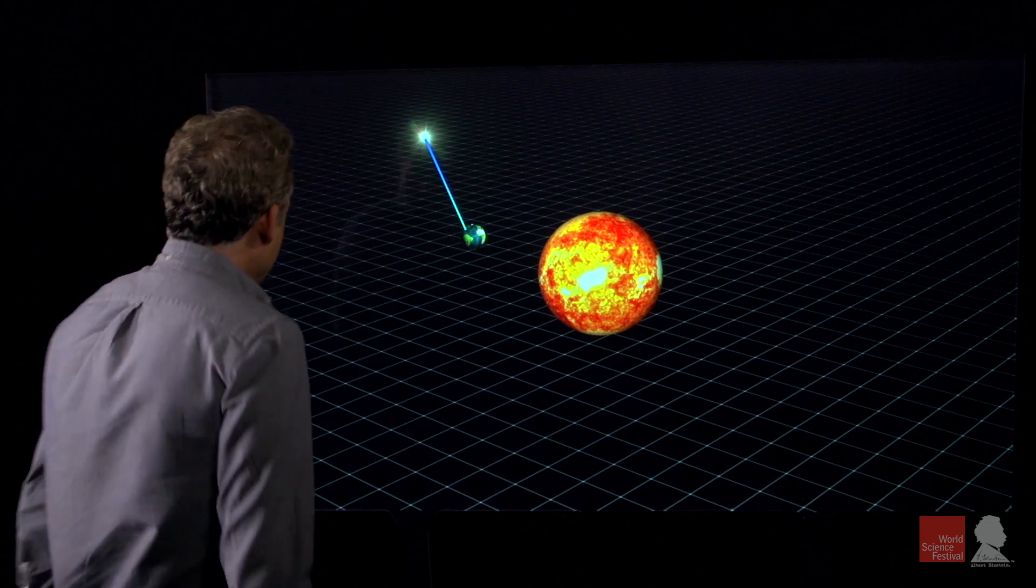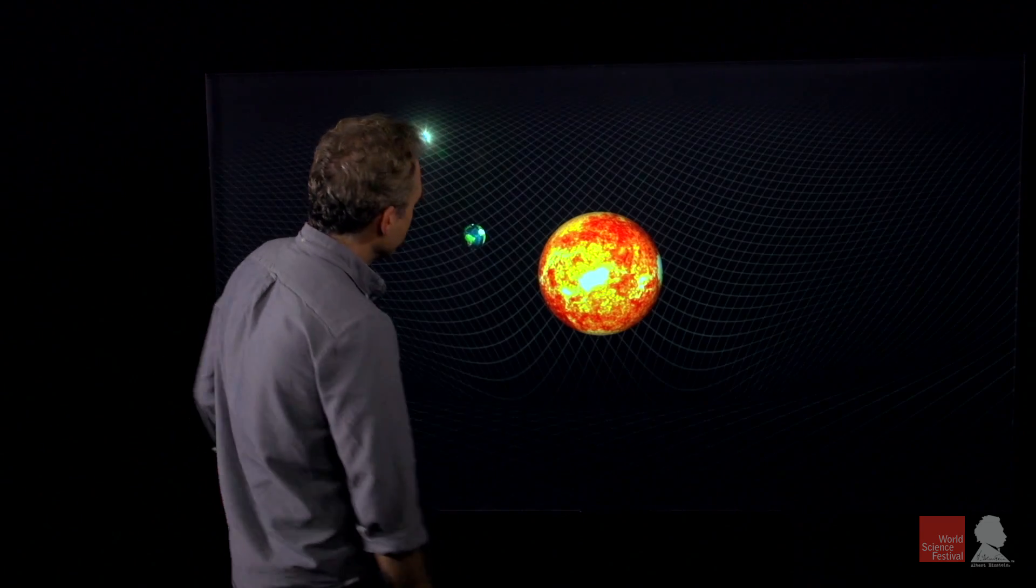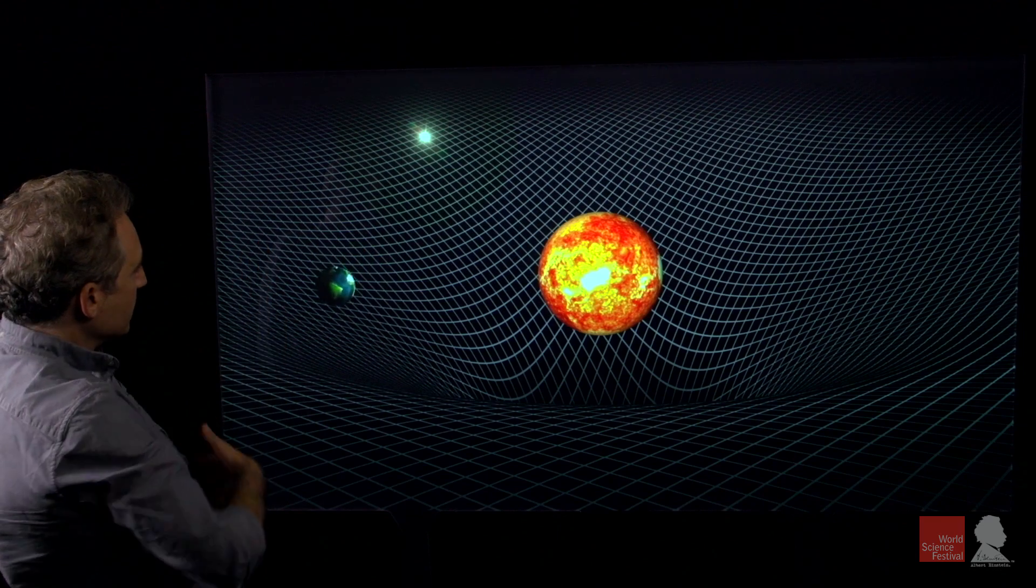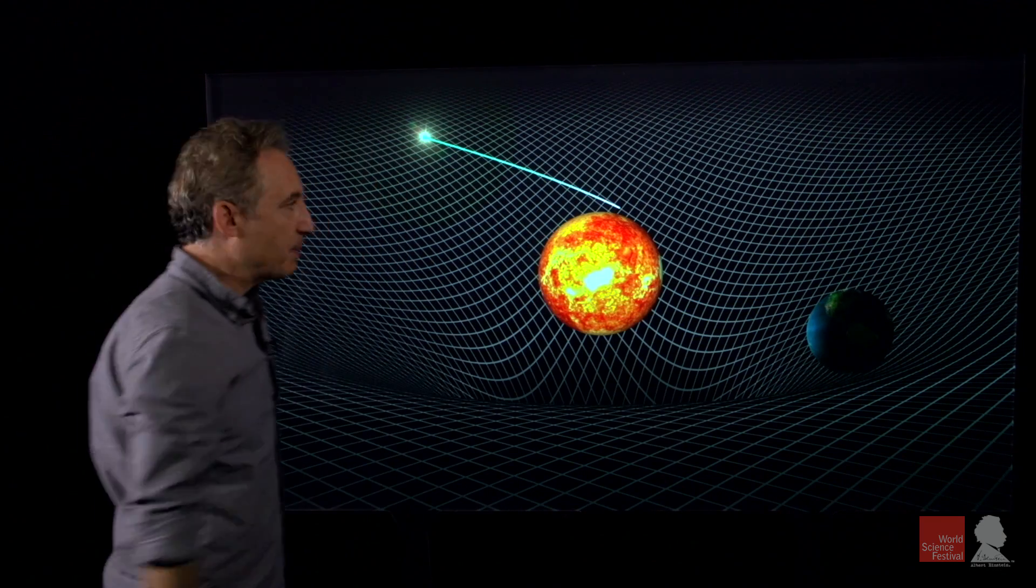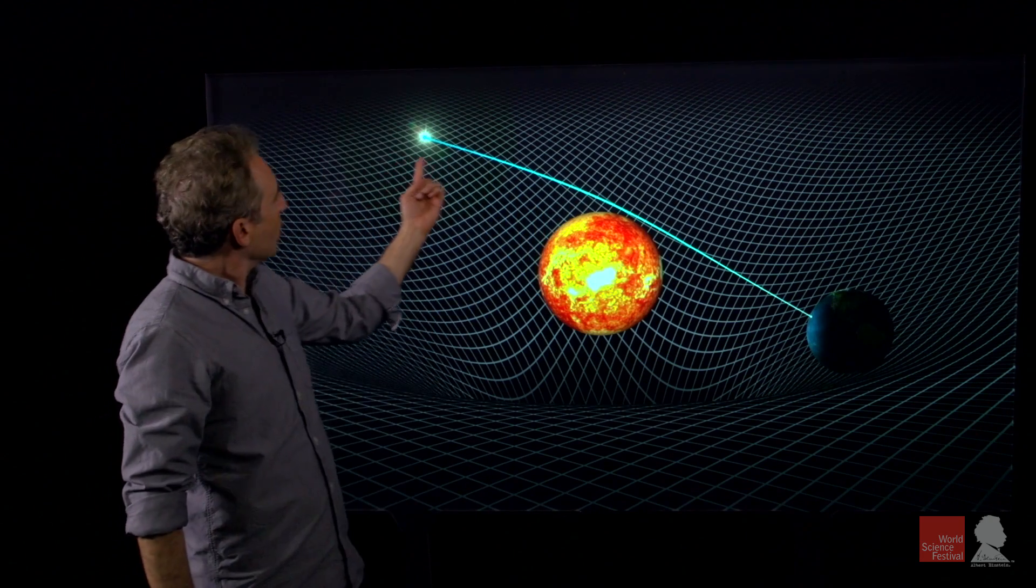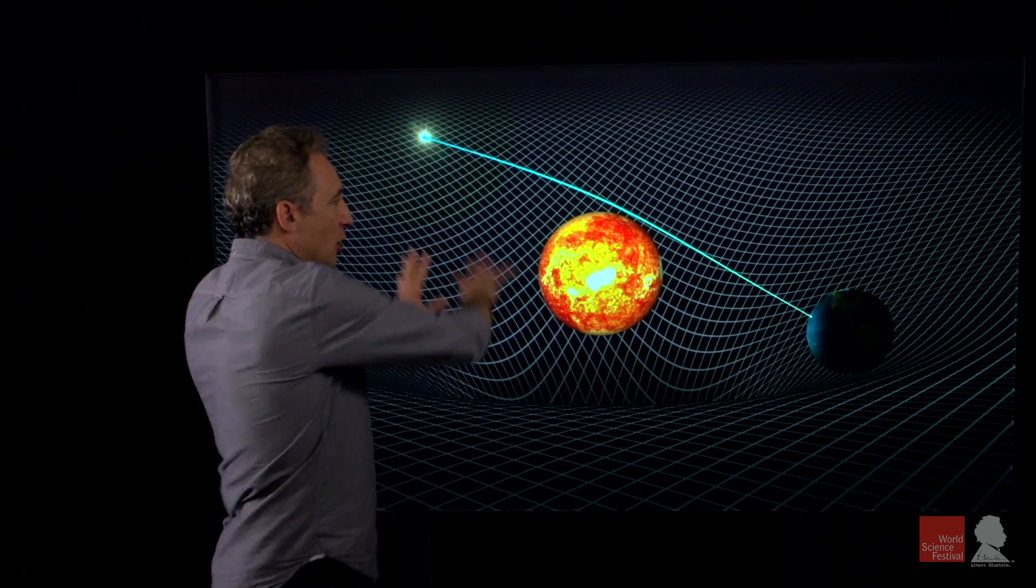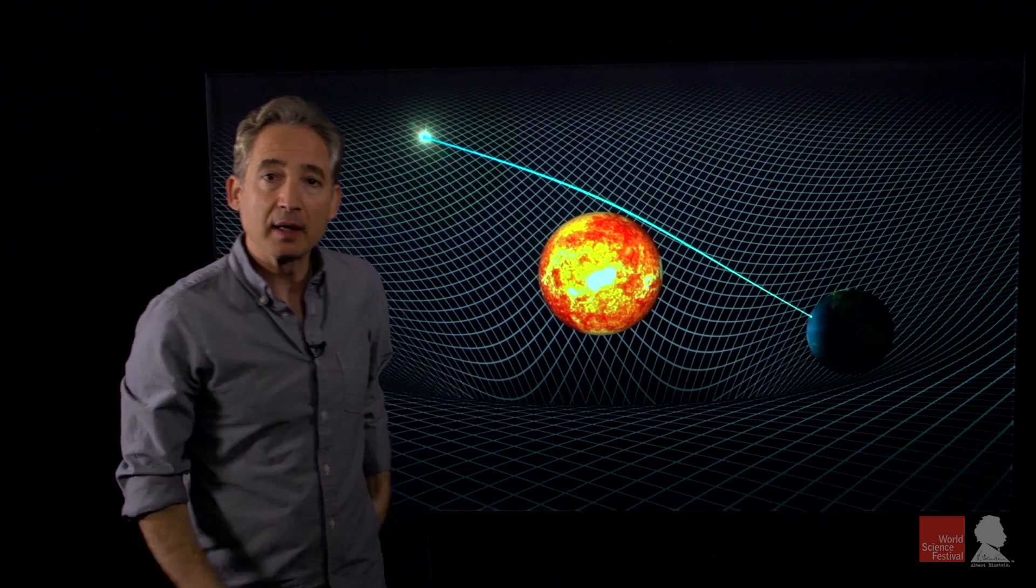But then Einstein says, imagine that we're looking at that same star six months later, when the Earth is on the far side of the sun. He says, look, if my ideas of warps and curves in space are correct, then that starlight trajectory will go on a curved path as it goes through the curved spacetime region near the sun.